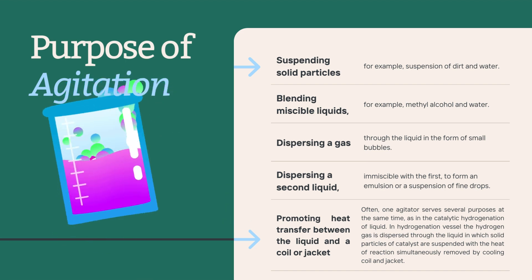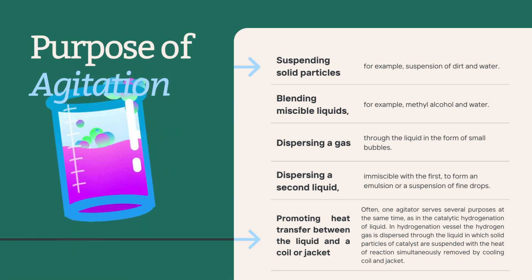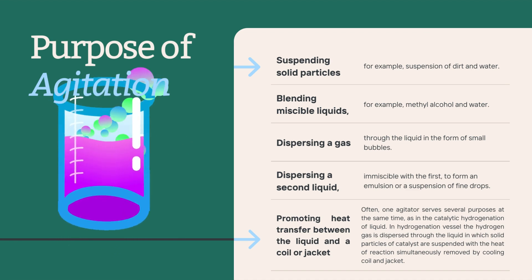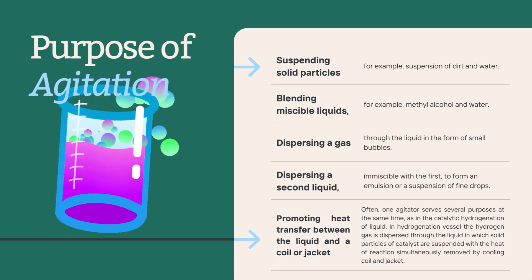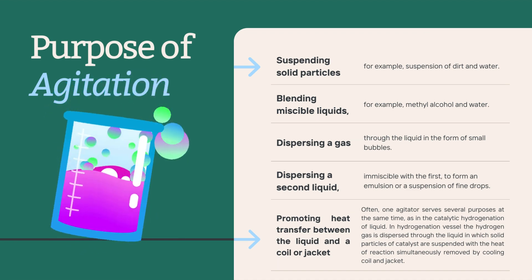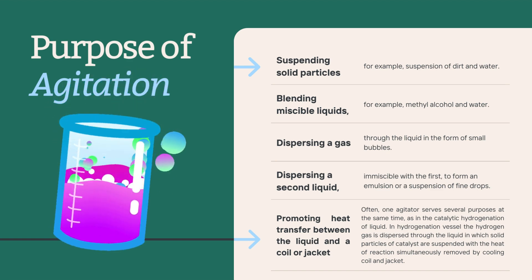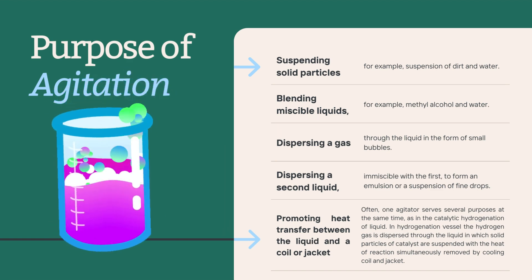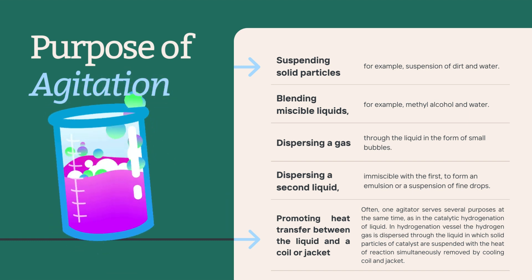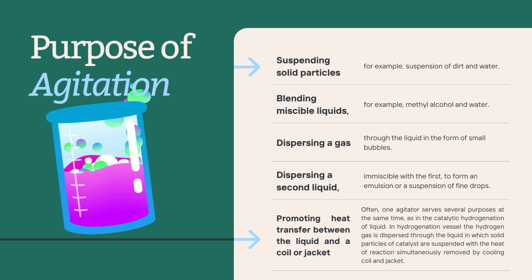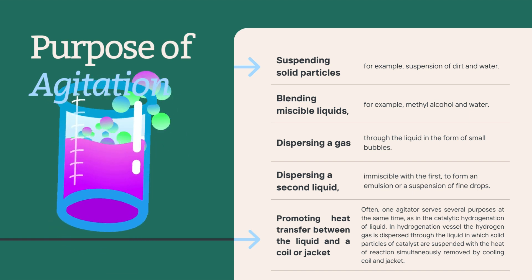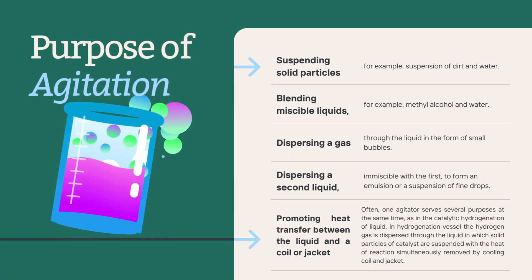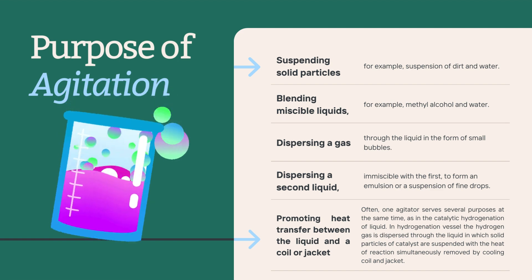Often one agitator serves several purposes at the same time. In a hydrogenation vessel, for example, hydrogen gas is dispersed through the liquid in which solid particles of catalyst are suspended, while the heat of reaction is removed simultaneously by the cooling coil and jacket. A real-life example of agitation is a washing machine, which agitates your clothes by moving them through soapy water to remove stains effectively.